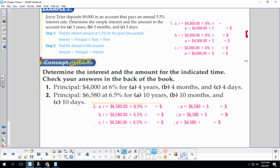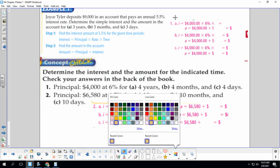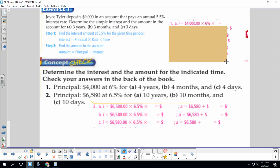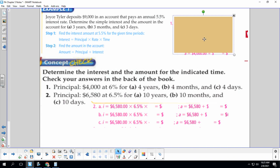Example one: Joyce Tyler deposits $9,000 into an account that pays an annual 5.5% interest rate. Determine the simple interest and the amount in the account for three years, three months, and three days. We're going to use the interest formula and the amount formula. So let's go ahead and do it together. You guys are going to need a calculator to help calculate this.